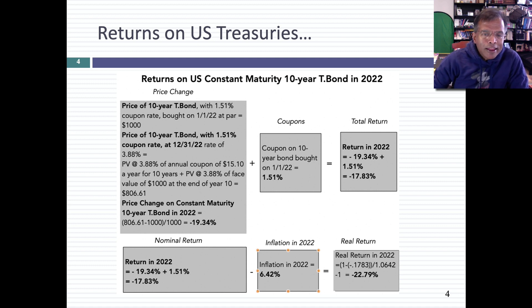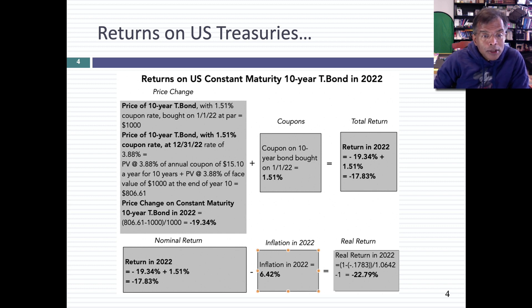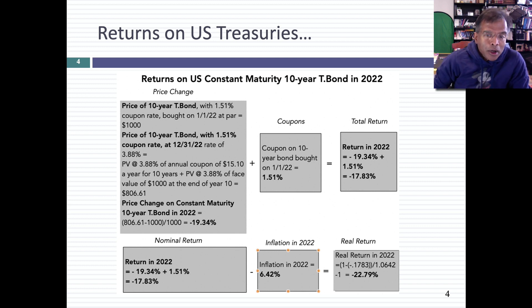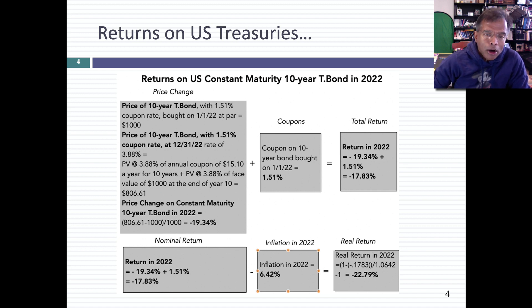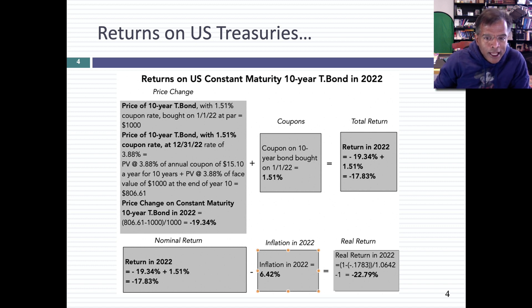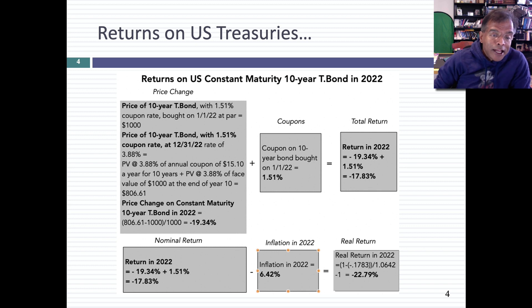You hold on to the bond at the end of the year. Usually a 10-year bond becomes a 9-year bond. Let's assume that you were looking at a constant maturity bond where the bond maturity stays 10 years. The coupon rate is stuck at 1.51%, but the market interest rate at the end of the year was 3.88%. Now, if you take that T-bond and you reprice it using a 3.88% interest rate — what does repricing mean? You take the coupons of $15.10, that's 1.51% of $1,000 each year, present value of that coupon for 10 years, and you take the present value of the $1,000 you're going to get at the end of year 10. The present value you get is about $807.